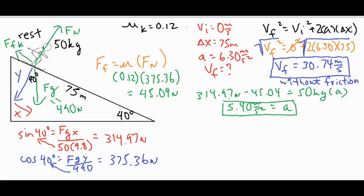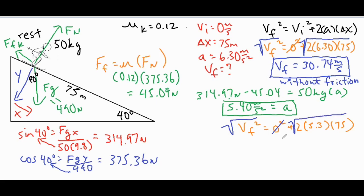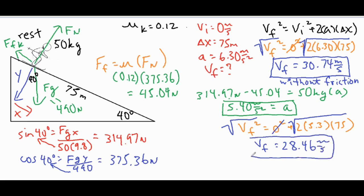Now we do the problem again with our new acceleration. The initial velocity is still zero and delta x is still 75 meters; we just plug in the new acceleration. As expected, the second final velocity is less than 30.74 meters per second because this case includes friction, which opposes the slide and reduces acceleration.